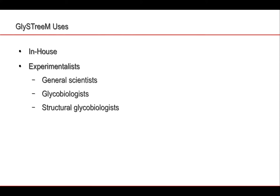The uses of the GlyStream ontology and triple store are: first, in-house — we use it to validate structures in GlyConnect, to make sure compositions match and core types are correctly assigned. The next set of users are experimentalists, and we also envisaged programmatic access served by the SPARQL endpoint, which allows programs to access the information and query the database.